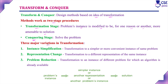There are three major variations in the transformation stage. The first is instance simplification, where the given problem is transformed into a simpler or more convenient instance of the same problem. The problem instance itself is not changed; it is just transformed into a simpler form so that the solution can be found more easily.